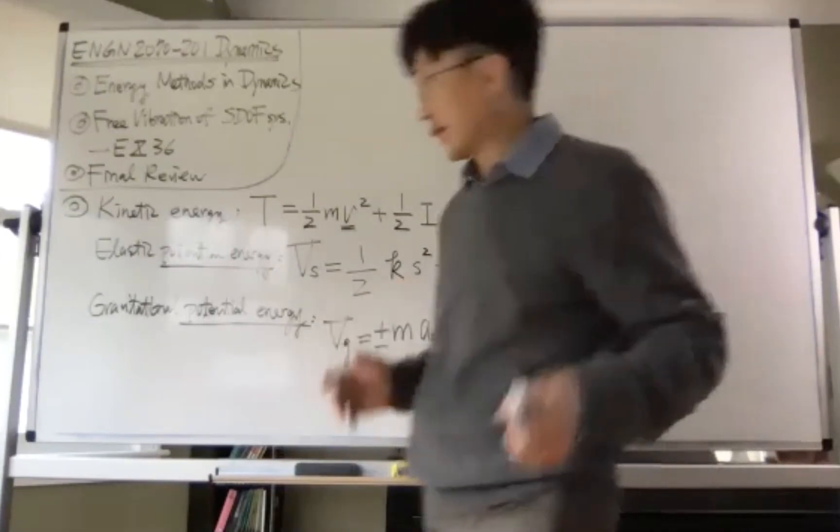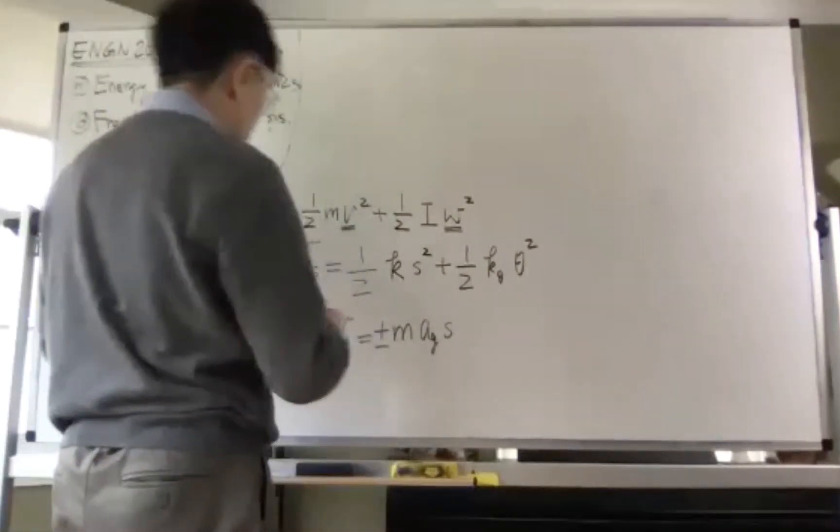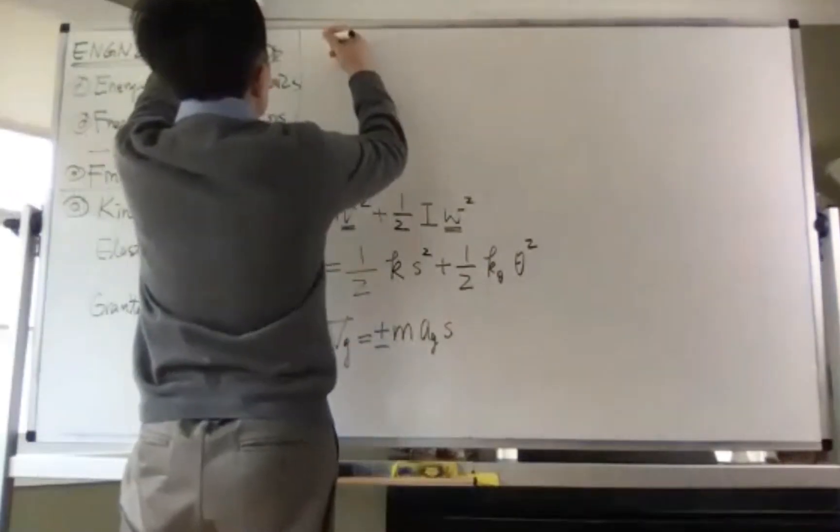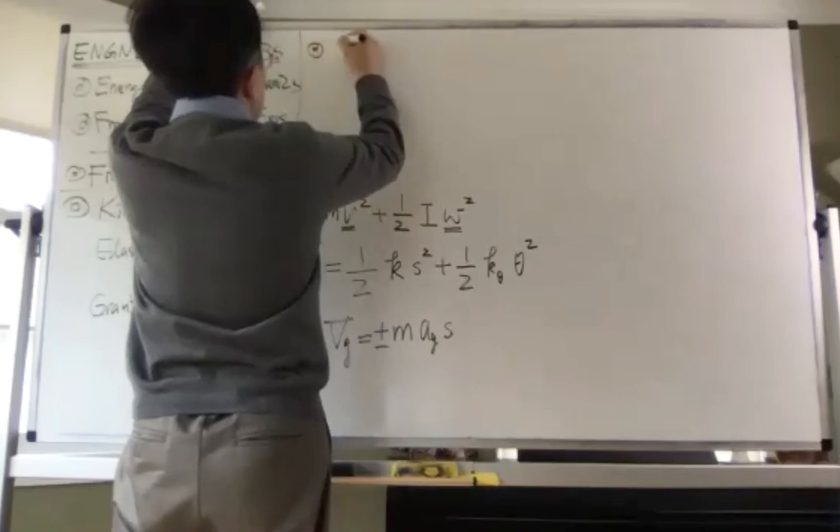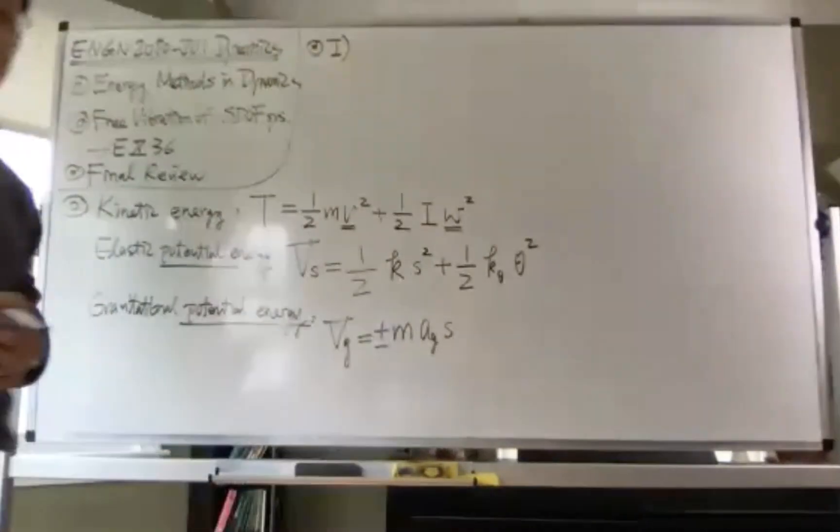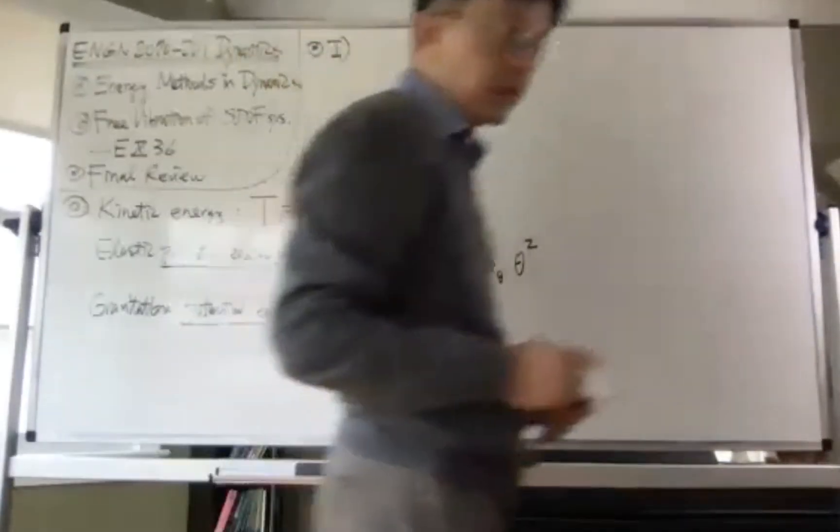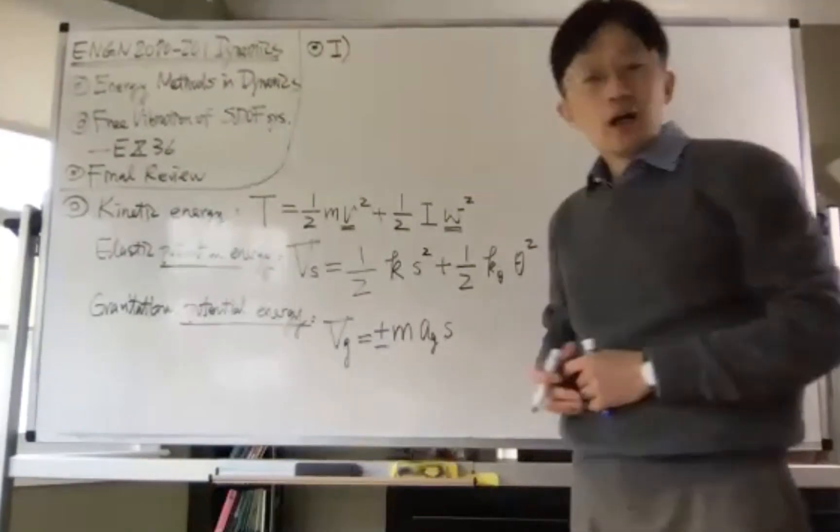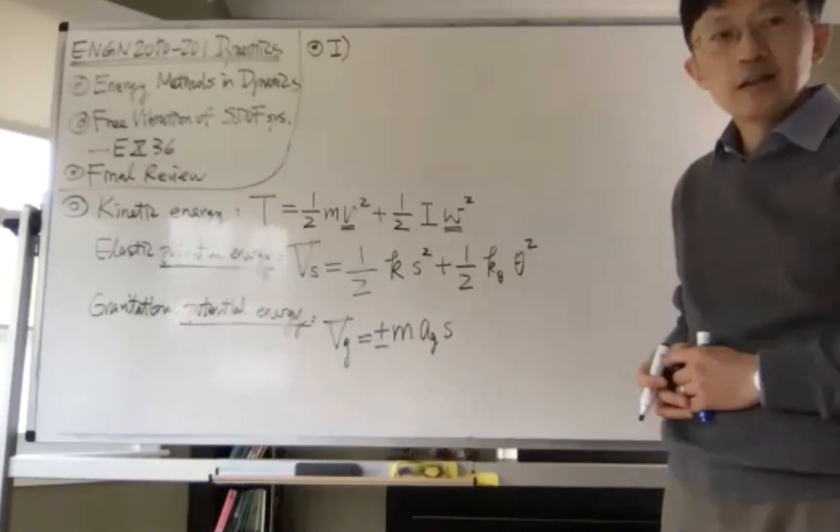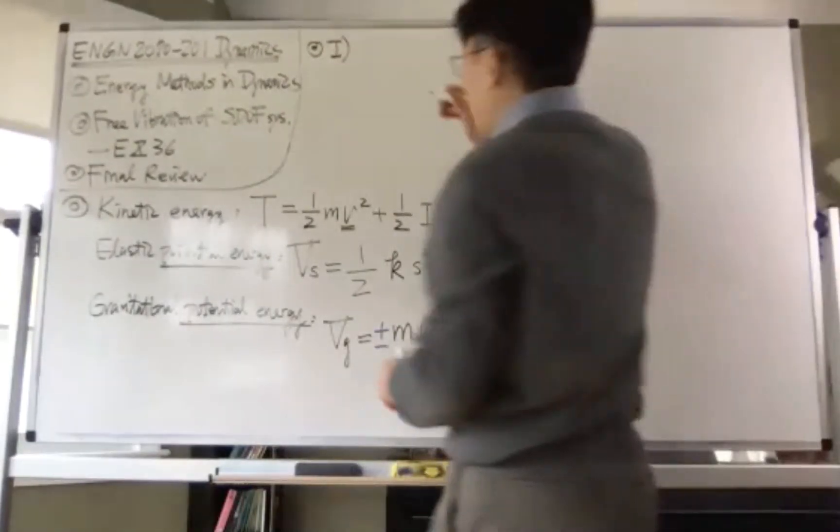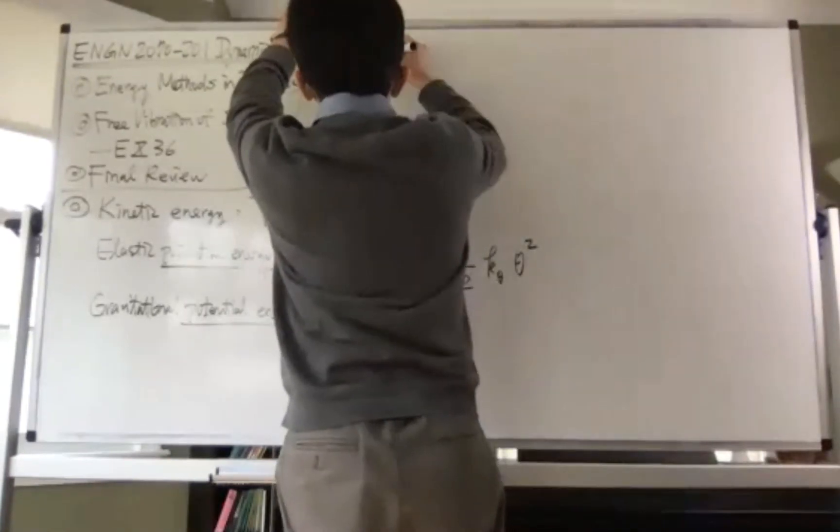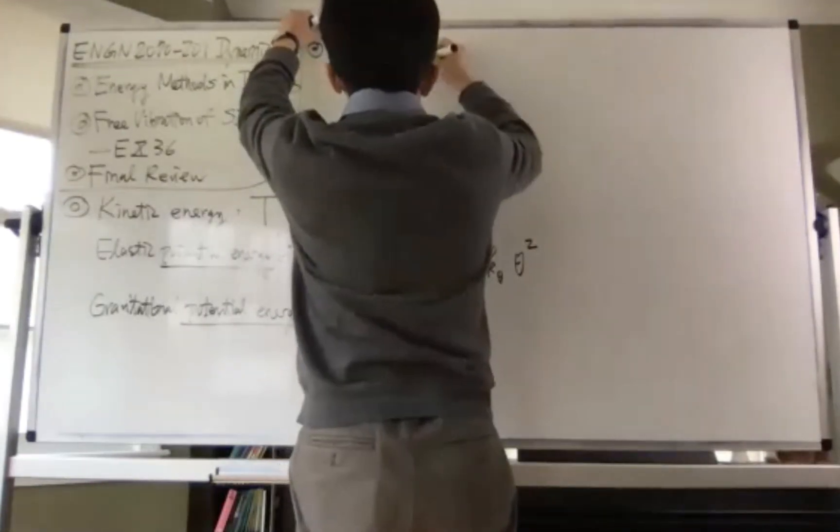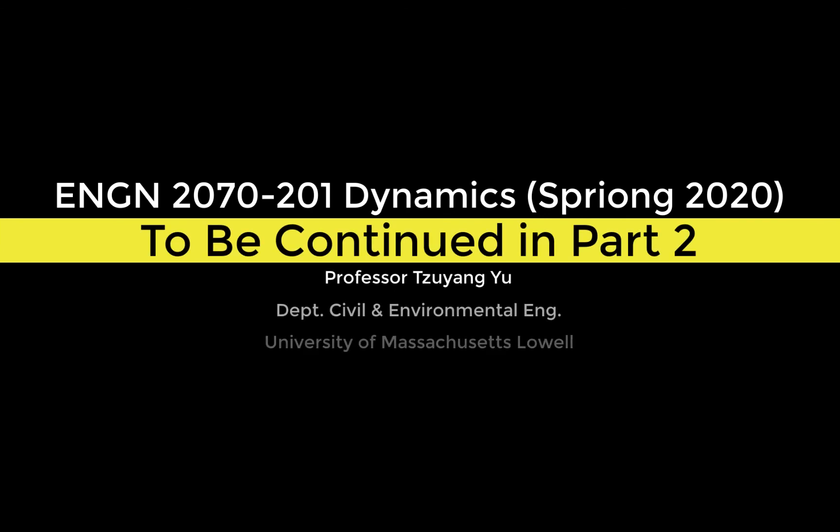Now, that's what we know in undergraduate dynamics. So what are the energy methods? The first method which you will learn later on in other advanced courses is what we call Hamilton's Principle. The second method is what we call...